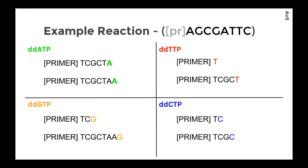Here I'm going to show you an example reaction to demonstrate this process. Up in the title, I've put a sample sequence, AGCGATTC. The corresponding sequence that would be created from the polymerase reaction would be TCGCTAAG.